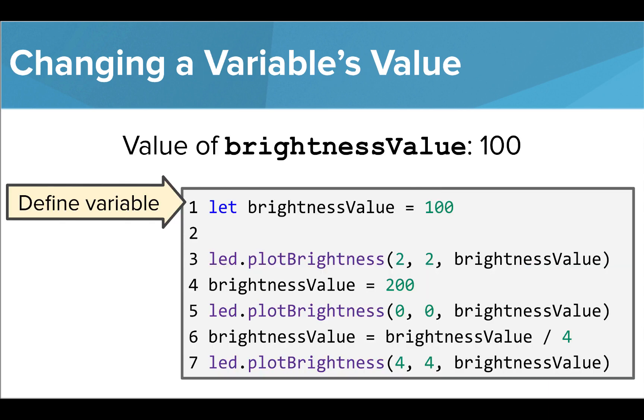Once we create a variable, we can change its value throughout our code as much as we'd like. Every time we give a variable a new value, we are overriding the value it had before. Each variable can only hold one value at a time.